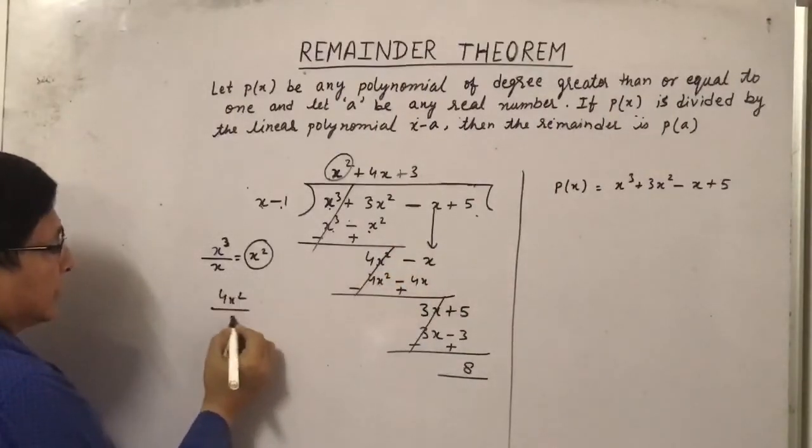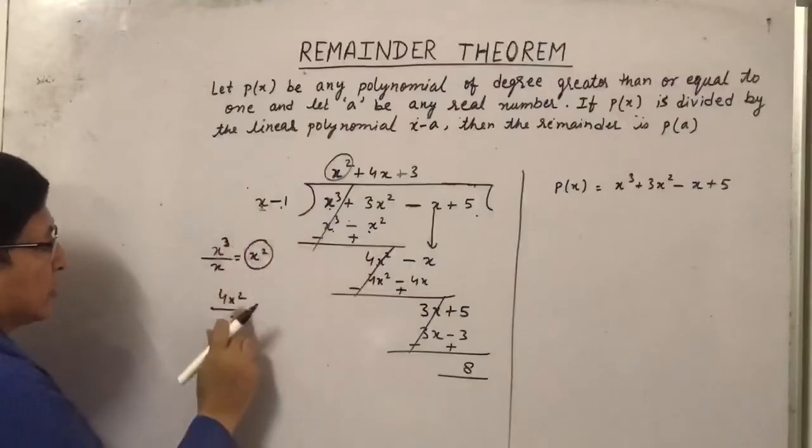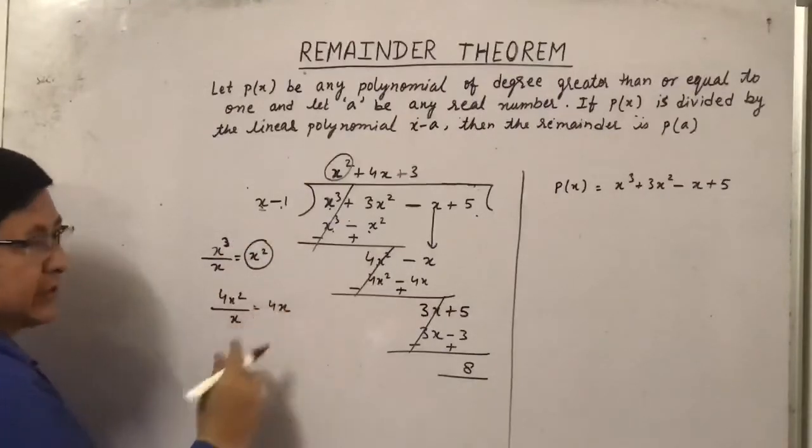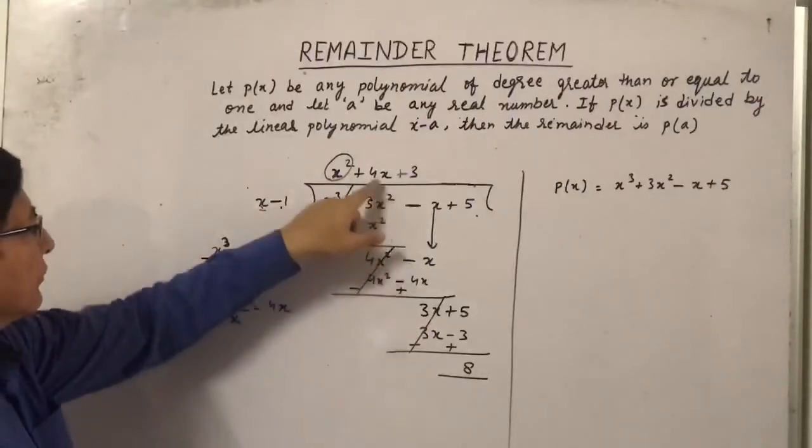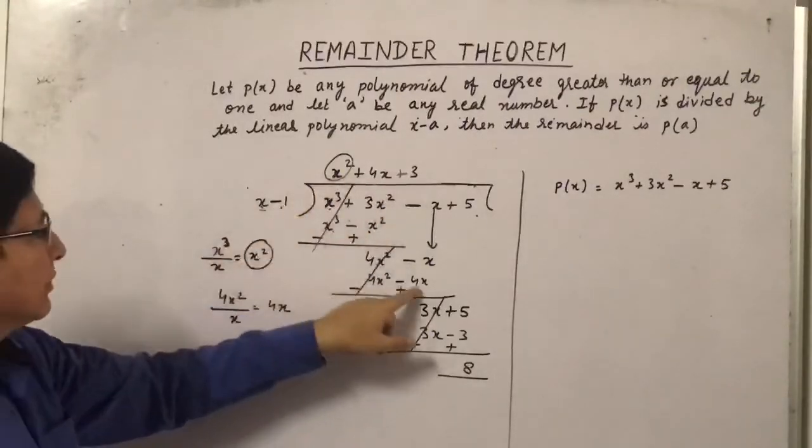Now this 4 x square again is to be divided by x, so it will get an answer 4 x here. So I have written here 4 x. 4 x into x will become 4 x square and 4 x into minus 1 will become minus 4 x.